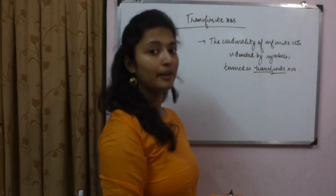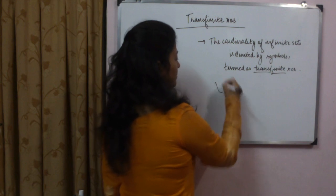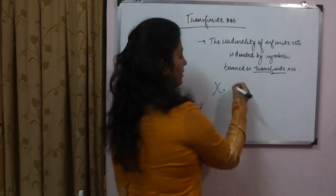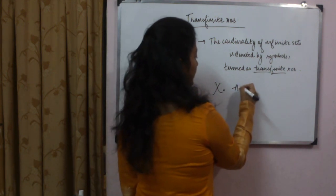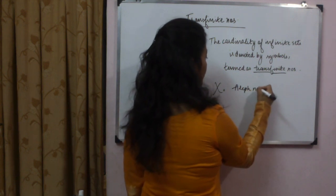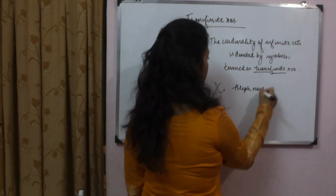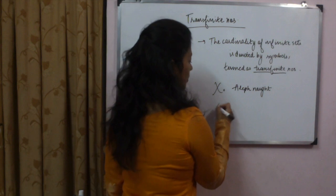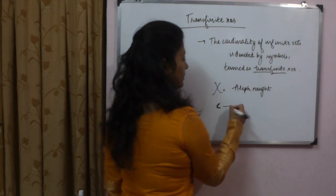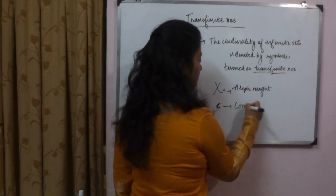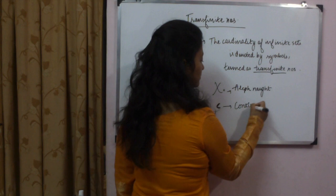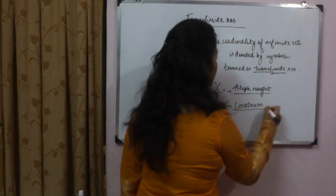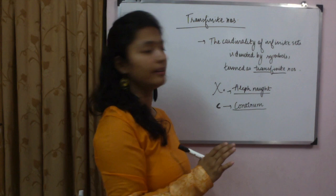Now let's look at the symbols we use. This symbol here is Aleph-null (ℵ₀). This is a symbol we use very commonly. This other symbol — small c — is called the continuum. These are the two most important symbols for us.